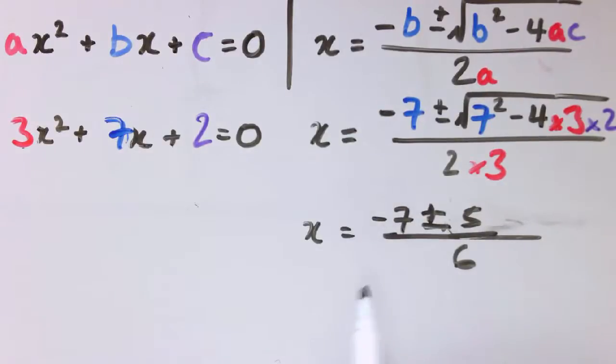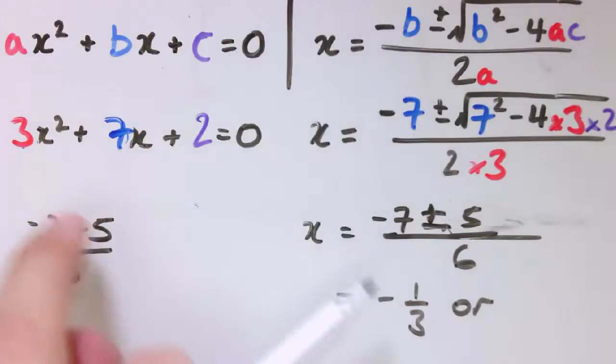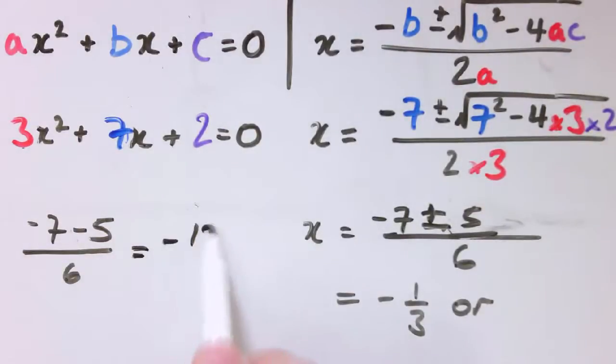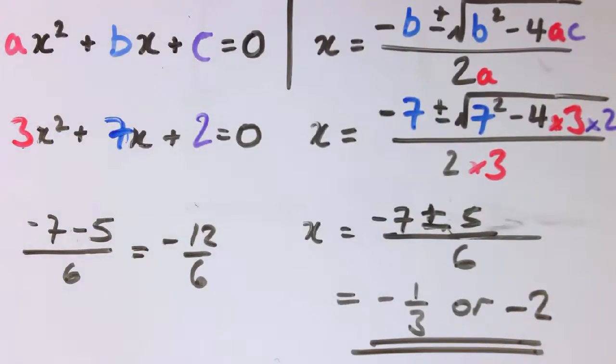What it means is there are two answers here, and we get one where we use the plus sign. So it's minus 7 plus 5 over 6, which is minus 2 over 6, which is minus 1 third. And we get another answer where we do the same thing, but we take the minus. So it's minus 7 minus 5 all over 6, which is minus 12 over 6, which is minus 2. So there are two answers here, minus 1 third or minus 2.